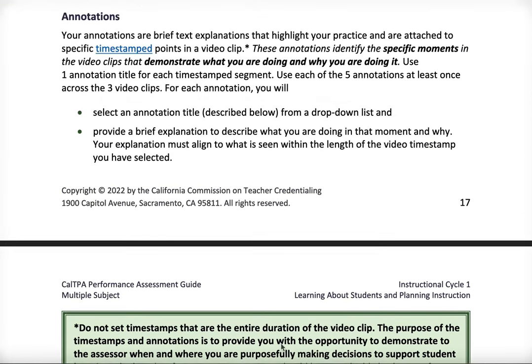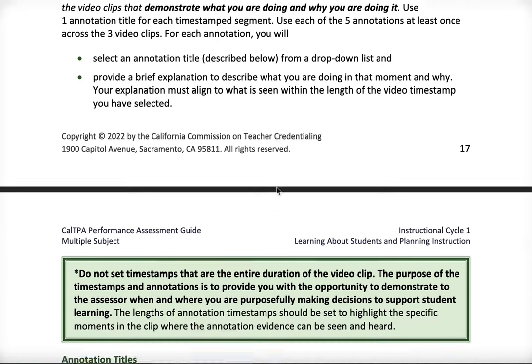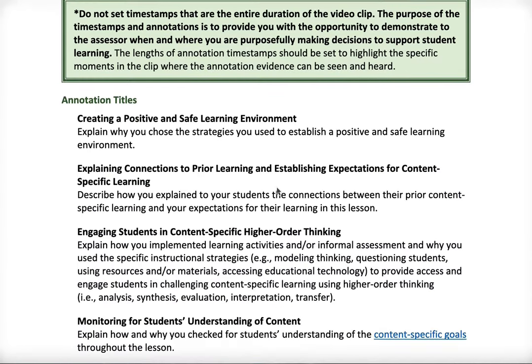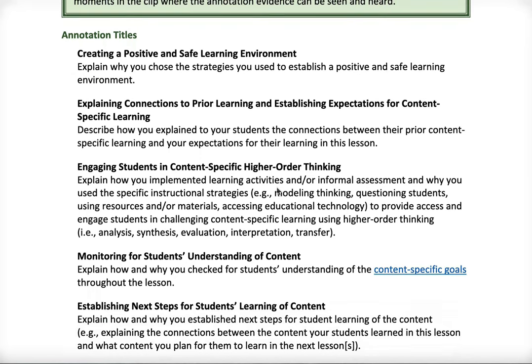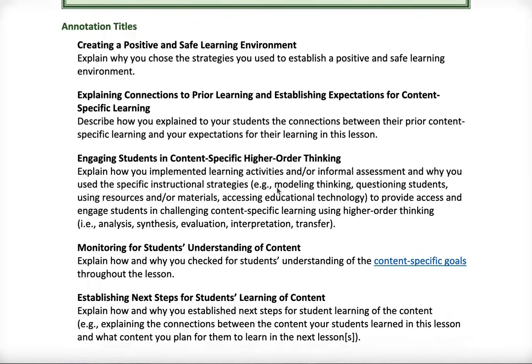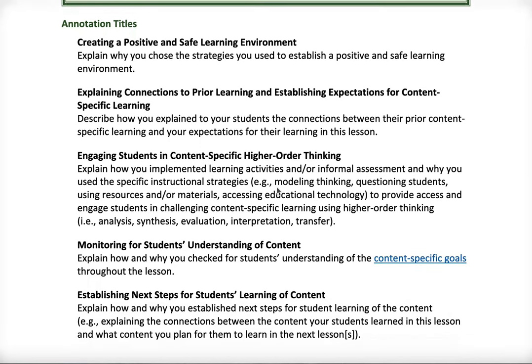When you annotate, you're going to select an annotation title from a dropdown menu and then write an annotation of no more than 1000 characters about what you're doing and why you're doing it. We'll talk about how to write strong annotations in another video. This one is just the nuts and bolts. Here are your annotation titles for Cycle 1.